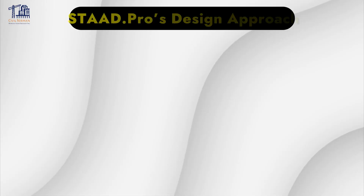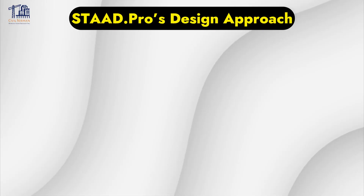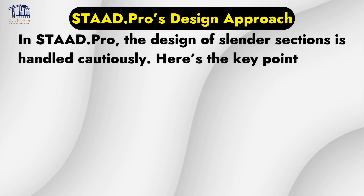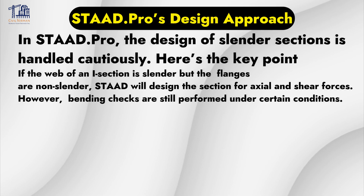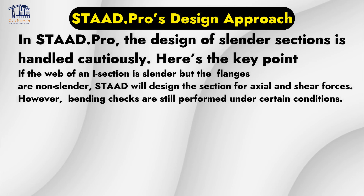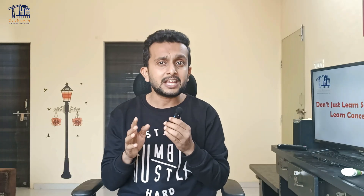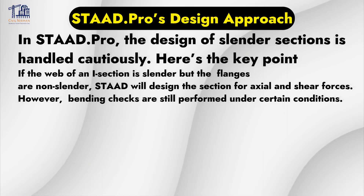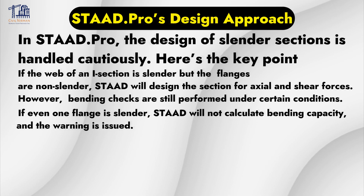Now let's understand how STAAD Pro designs such sections. In STAAD Pro, the design of slender sections is handled cautiously. If the web of an I-section is slender but the flanges are non-slender, STAAD will design the section for axial and shear forces. However, bending checks are still performed under certain conditions. If even one flange is slender, STAAD will not calculate bending capacity and the warning will be issued.